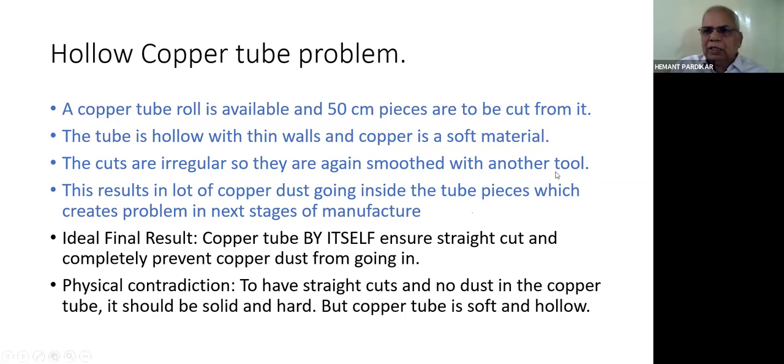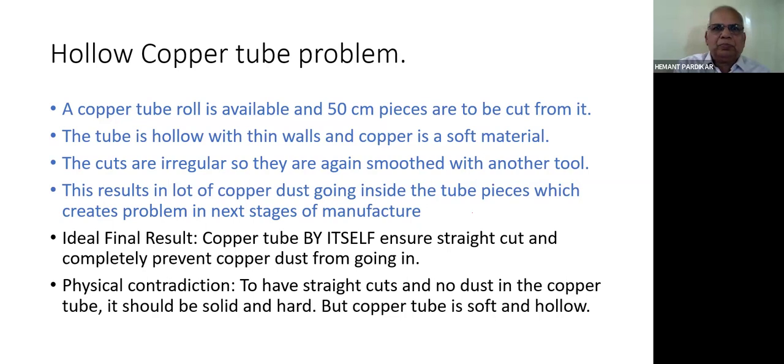In the copper tube example, smoothing with another tool is a corrective action, and the three stage manual process to remove copper dust is a corrective action. These corrective actions are removed completely by a providing action, which is temporarily changing the nature of the copper tube by putting ice in it to make it solid and hard, so that facilitates productive action which is just cutting those 50 centimeter pieces. The first rule is eliminate all corrective actions by use of providing actions or sometimes even productive actions.